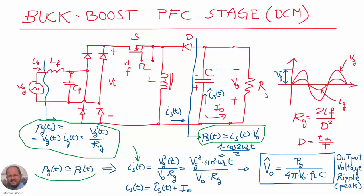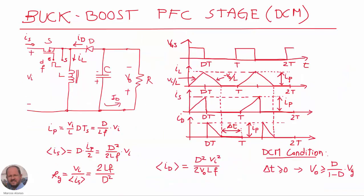Finally we get this expression. Using a trigonometric equivalence, we can obtain for this current two components: the alternating component that is going to circulate through the capacitor C, and the DC component going into the load resistance R. By knowing the AC component of the current circulating through the capacitor and multiplying by the reactance of the capacitor, we can finally obtain the ripple at the output.